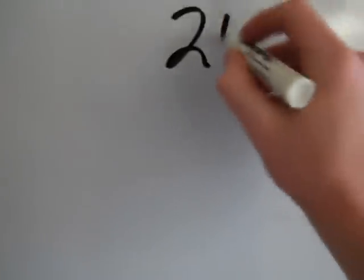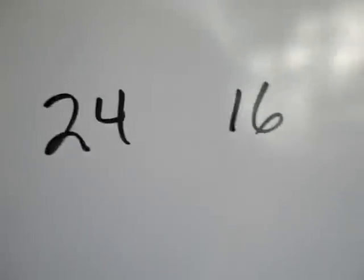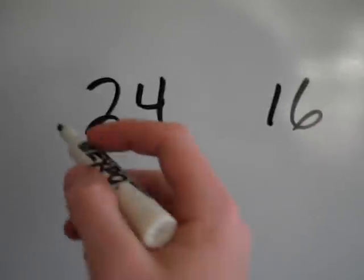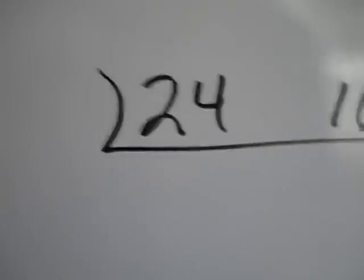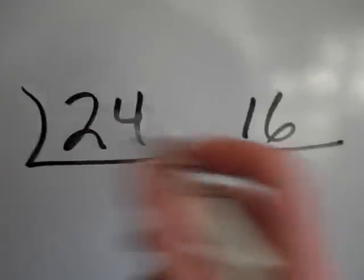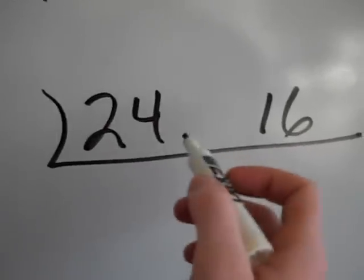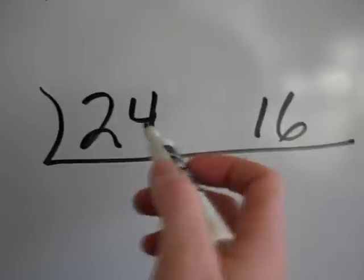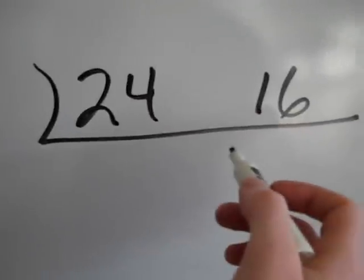So I'm going to do 24 and 16 again, but this time I'm going to put them next to each other. I'm going to use what's called a division ladder. Division ladder is where you make an upside down division box and you put it around both numbers. And then you try to divide these numbers by the same number. So you think about numbers that can go evenly into both of these.